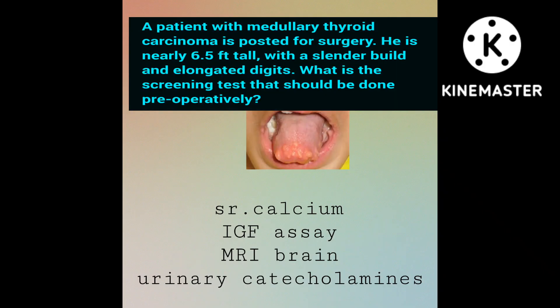Now comes the second question. A patient with medullary thyroid carcinoma is posted for surgery. He is nearly 6.5 feet tall and a slender build and elongated digits. So this indicates Marfanoid habitus, and he's having medullary thyroid cancer and the picture there is showing mucosal neuromas on the tongue. So all the M's, this is something related to MEN2B. For MEN2B there is involvement of pheochromocytoma, so the screening test that you need to do is urinary catecholamines. So option D is the answer.